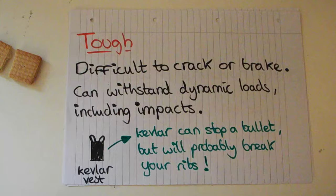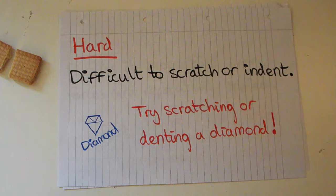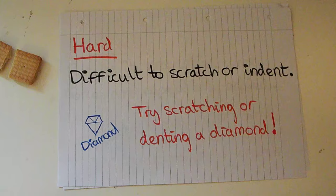Something that is hard is similar to tough but different. Hard just means it's difficult to scratch or indent. If you try to scratch or dent a diamond, you're not going to get very far unless you've got something made out of diamond, like a diamond saw.